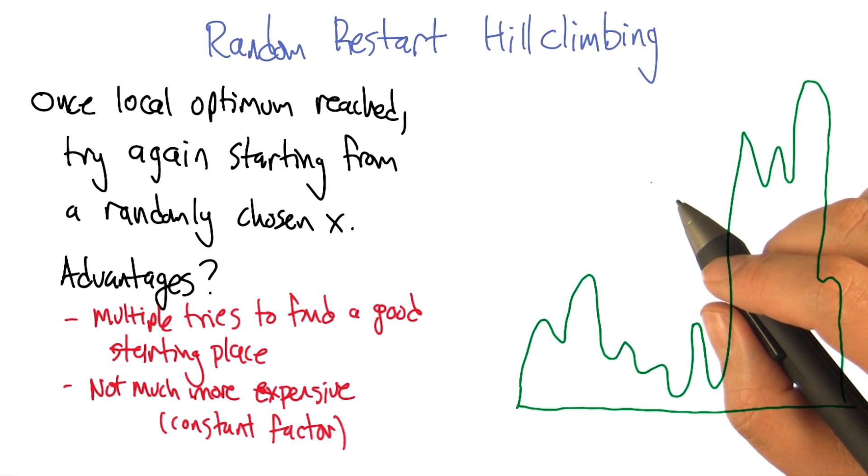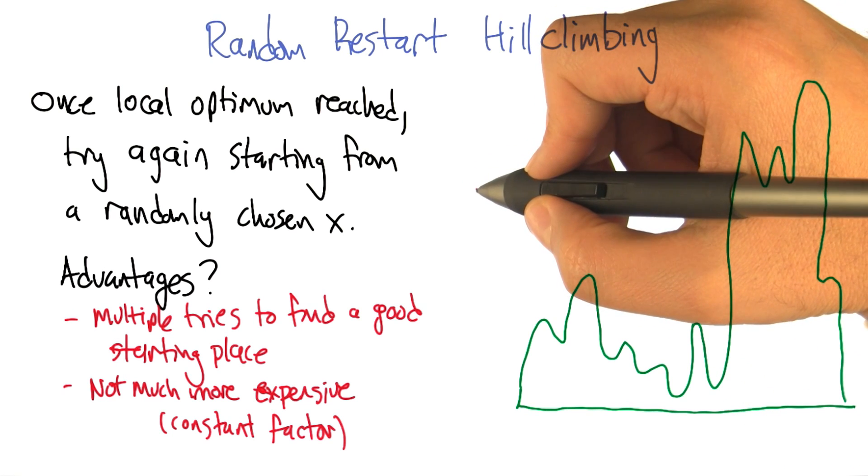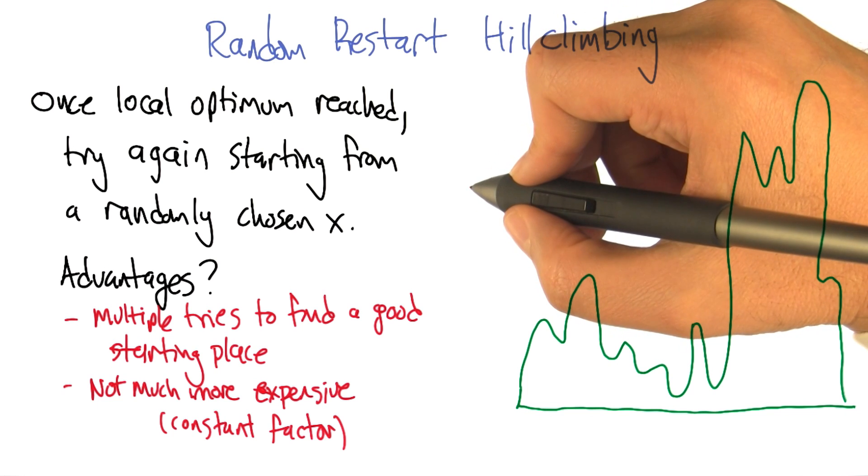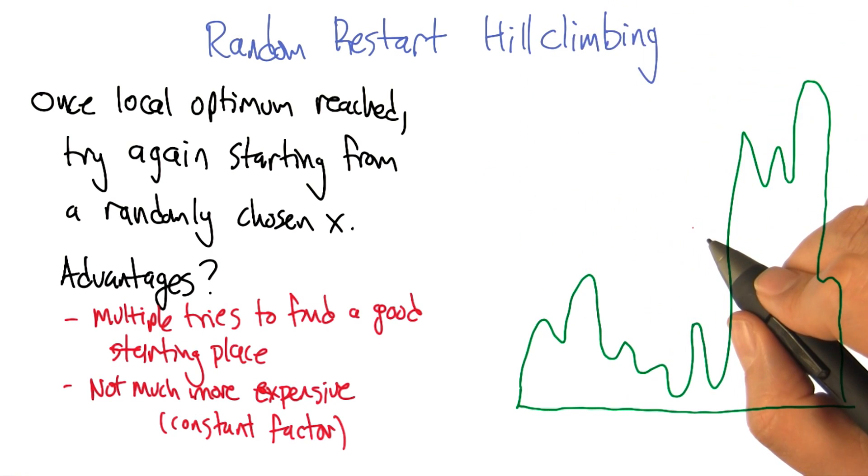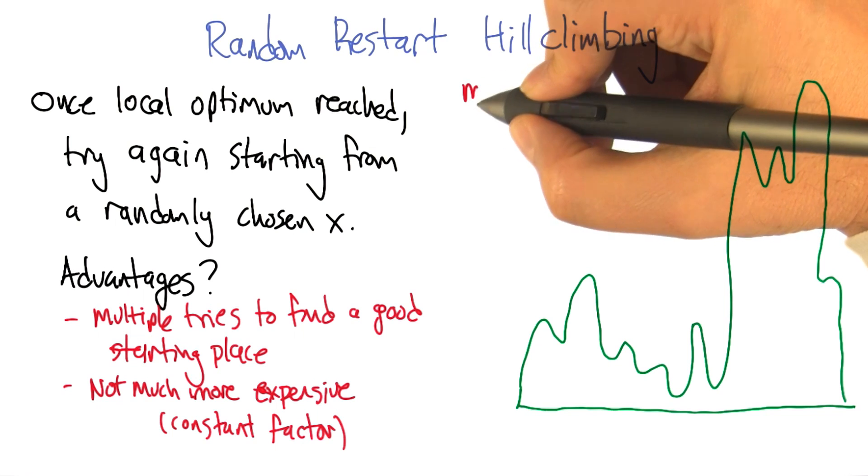Maybe you just keep starting too close to the same place you started before. It may be random, but you can get unlucky in random. So maybe you should make certain your next random point is far away from where you started, so that you cover the space. You want to cover the space as best you can. The randomness should do that, at least on average. But you're right, we could try to be more systematic.